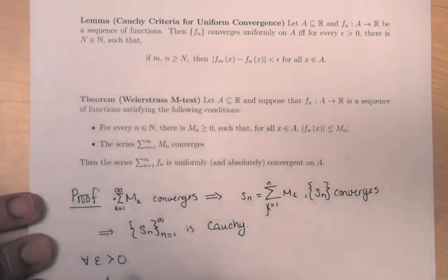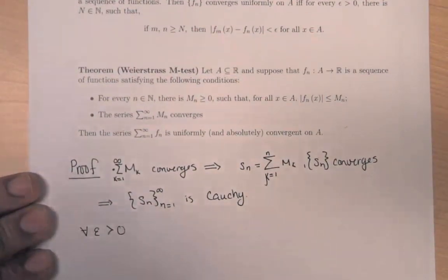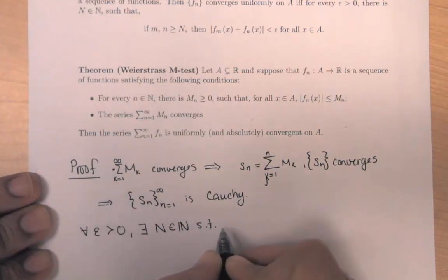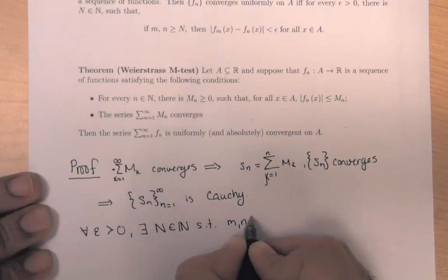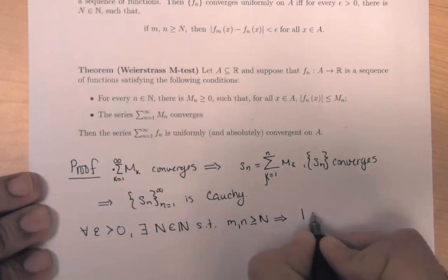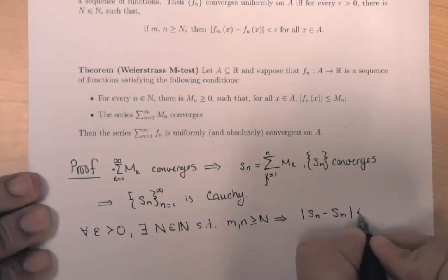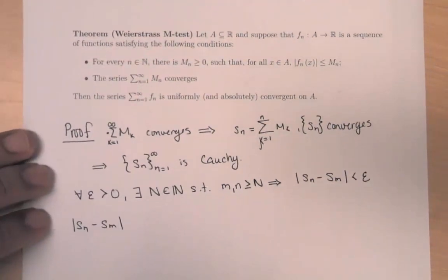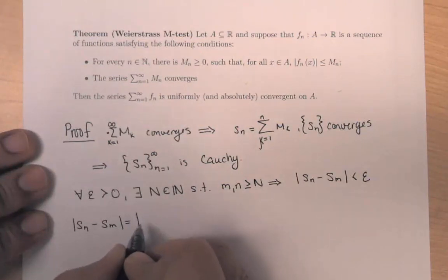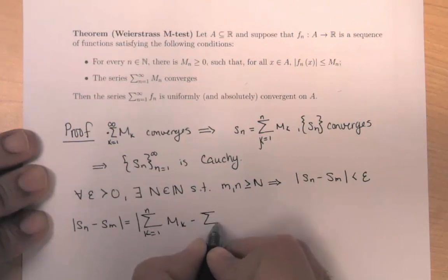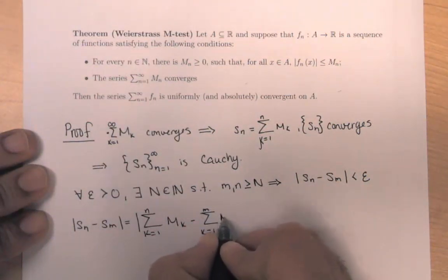Recalling the definition of Cauchy for a sequence of numbers: for any ε > 0, there exists a natural number N such that m, n ≥ N implies |S_n − S_m| < ε. Now, S_n − S_m equals the sum from k = 1 to n of m_k minus the sum from k = 1 to m of m_k.